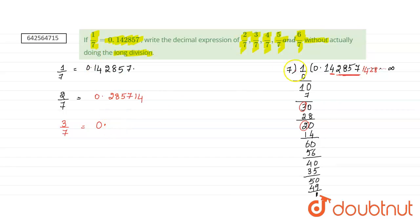1 is skipped because 1 is not needed here, we are starting from this point. So, 0 point, 4, 2, 8, 5, 7, 1, this one goes to the last.